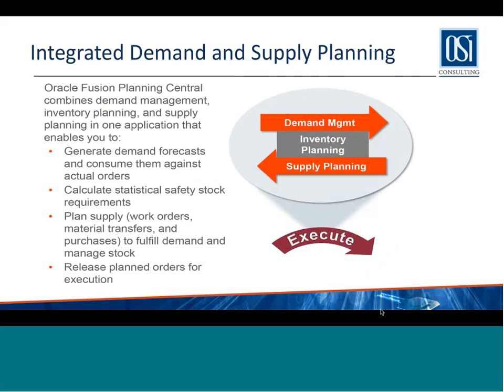Planning Central is an integrated demand and supply solution. It generates demand forecasts and then consumes those demands against actual orders. It helps you generate statistical safety stocks and plan supply against the demand to meet your forecasts, sales orders, and safety stock requirements, then helps you release planned orders for execution. In context of EBS value chain planning, it is equivalent to Demantra and ASCP together — put Demantra and ASCP in one box, or ODP and ASCP together, and that is what Planning Central is.